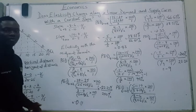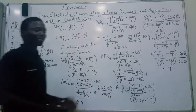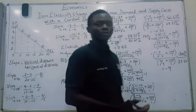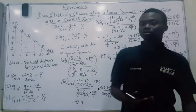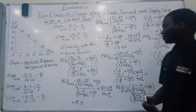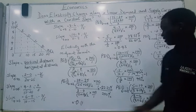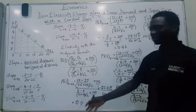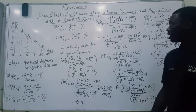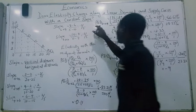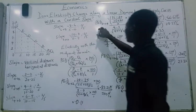This tells us that the elasticity of demand at this point is inelastic, because whenever values of price elasticity of demand are below 1, demand is price inelastic. Here it is really, really inelastic because 0.11 is a very small value.